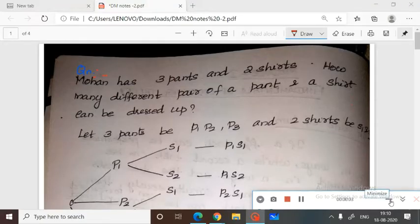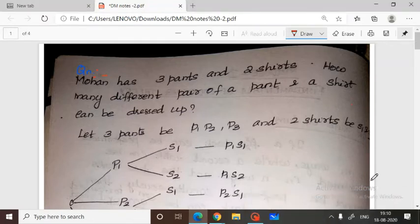Hello students, this is the second video on discrete mathematical structures. We have studied about the rule of sum and rule of product. Now I'll give you one or two examples. Here's one example: Mohan has three pants and two shirts. How many different pairs of a pant and a shirt